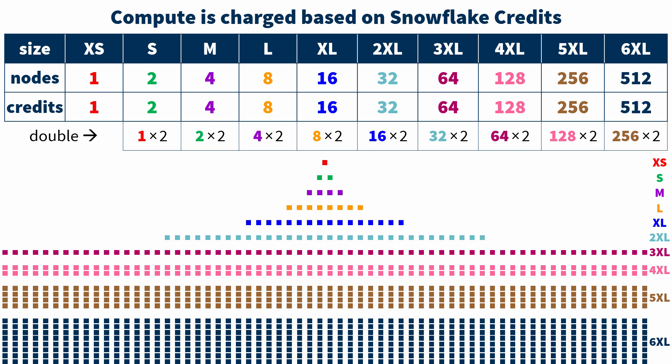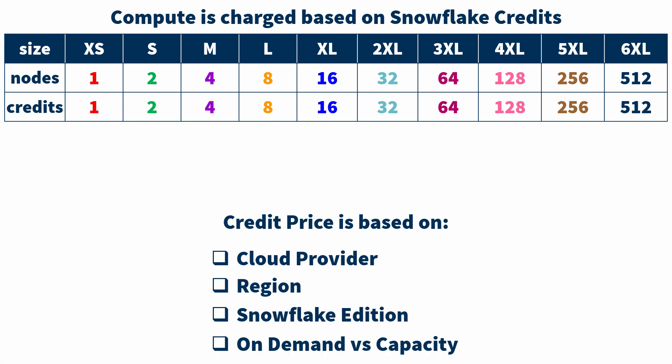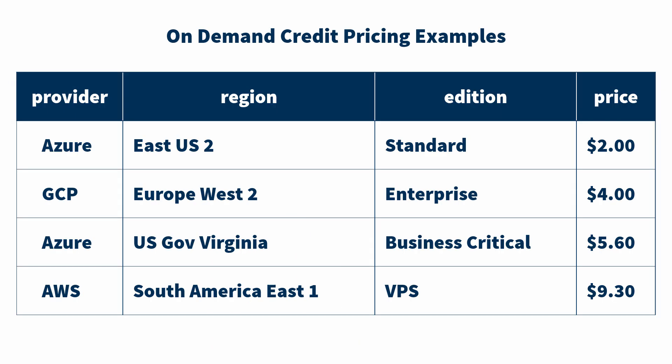When computing resources like CPU, RAM, and local storage double, your cost doubles too. The price per credit varies based on four factors. Here are just a few examples to show how on-demand credit price varies by provider, region, and edition.